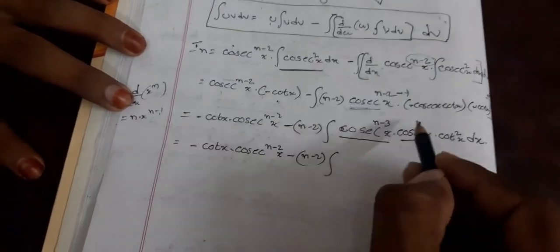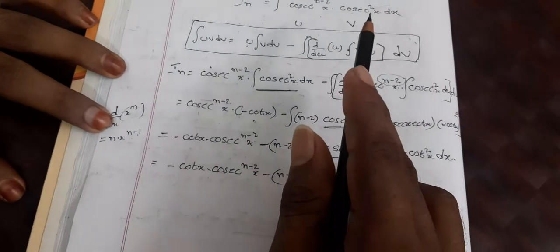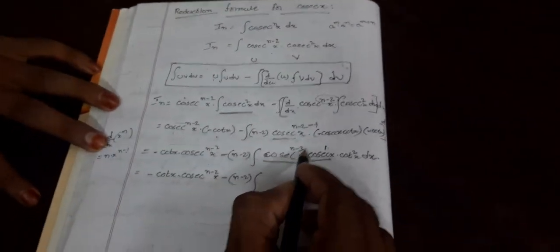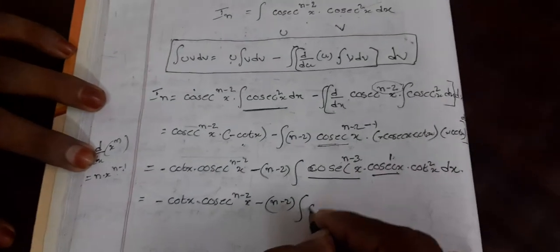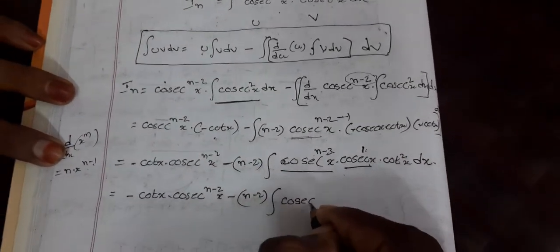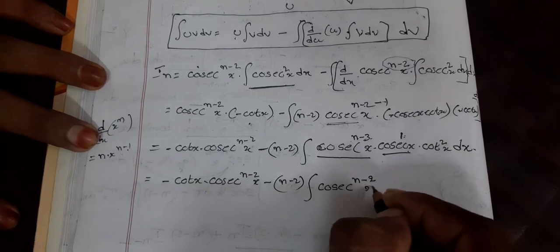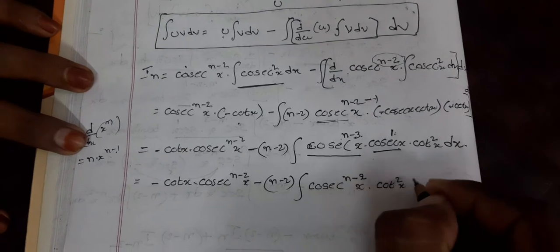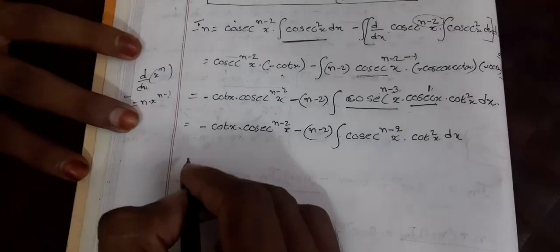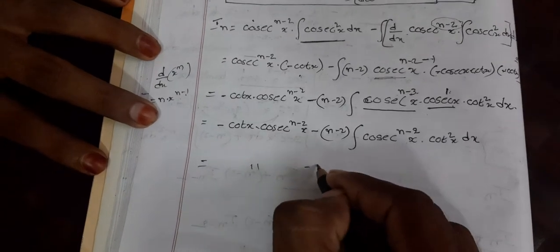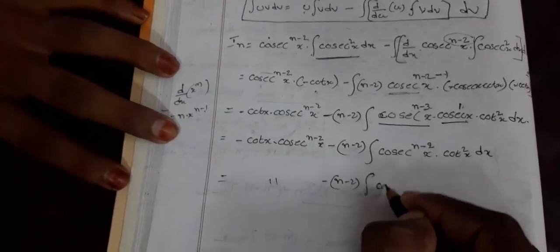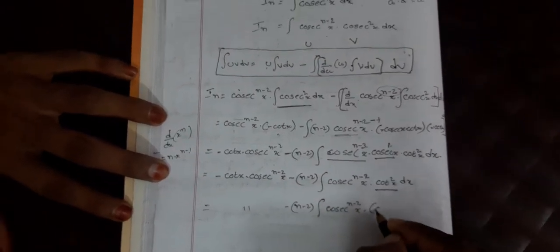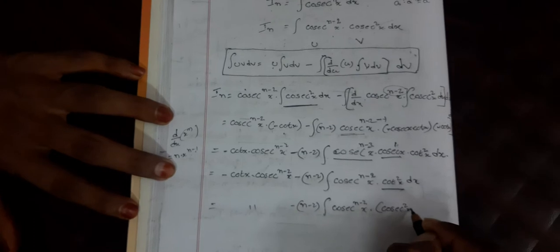Using a^m · a^n = a^(m+n): (n−3) + 1 = (n−2), so cosecant^(n-3)(x) · cosecant(x) = cosecant^(n-2)(x). That gives: −cot(x)·cosecant^(n-2)(x) minus (n−2) · ∫cosecant^(n-2)(x) · cot²(x) dx.